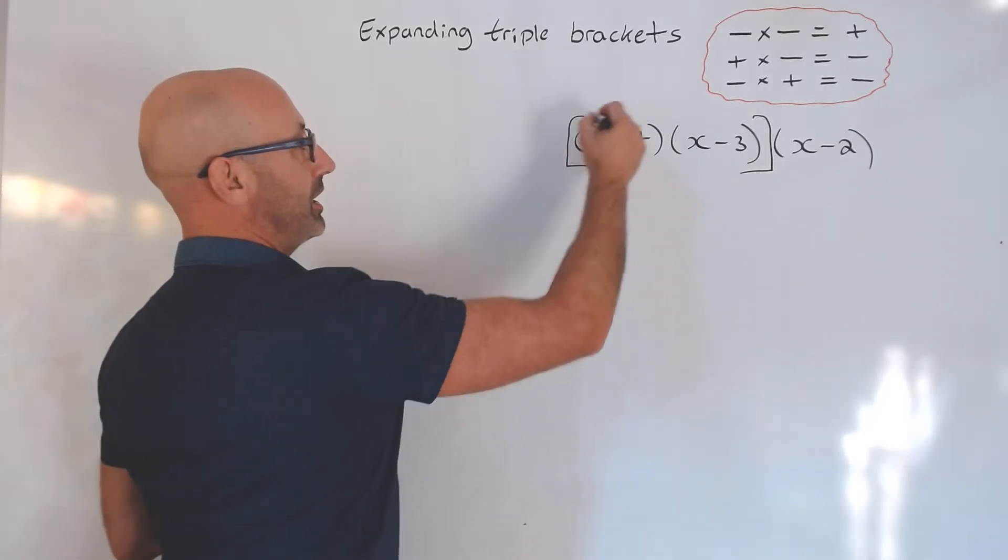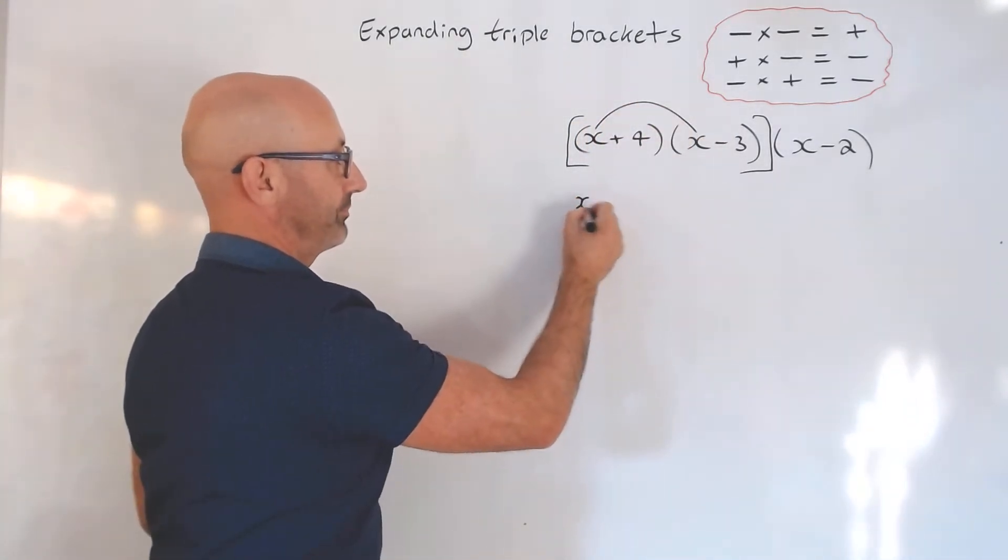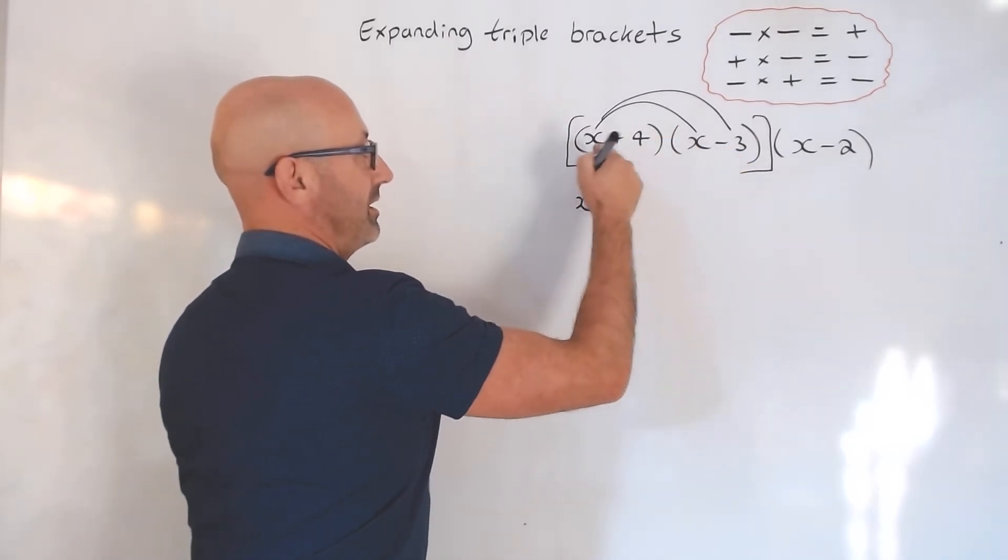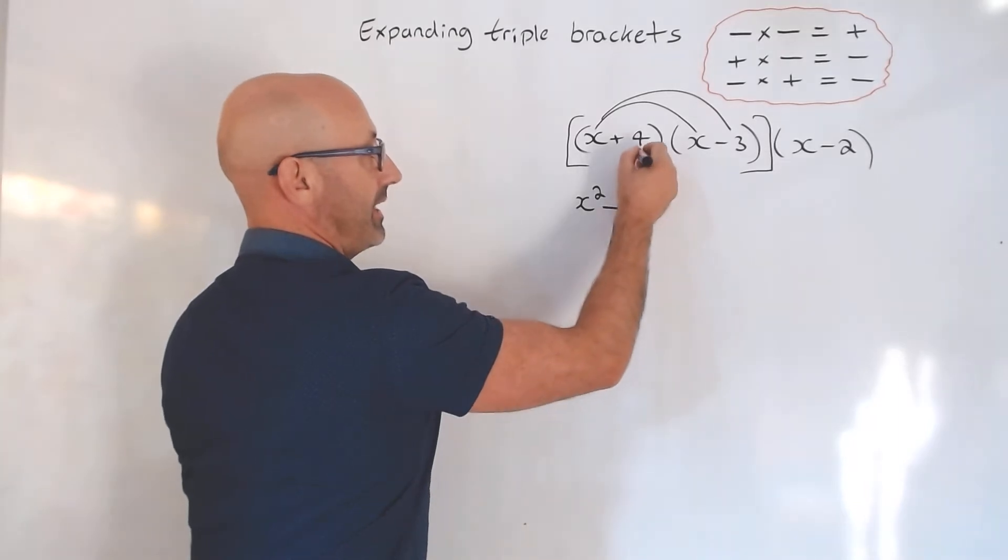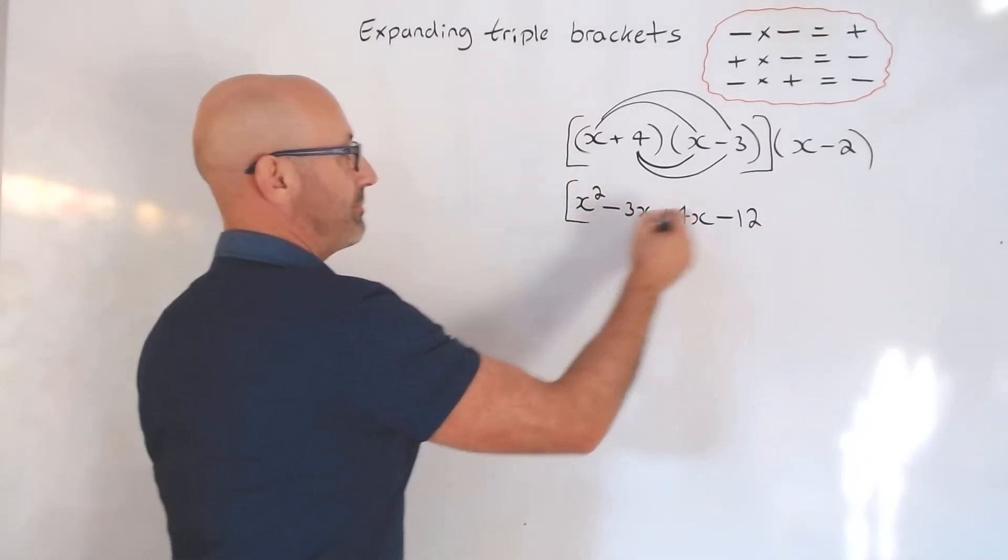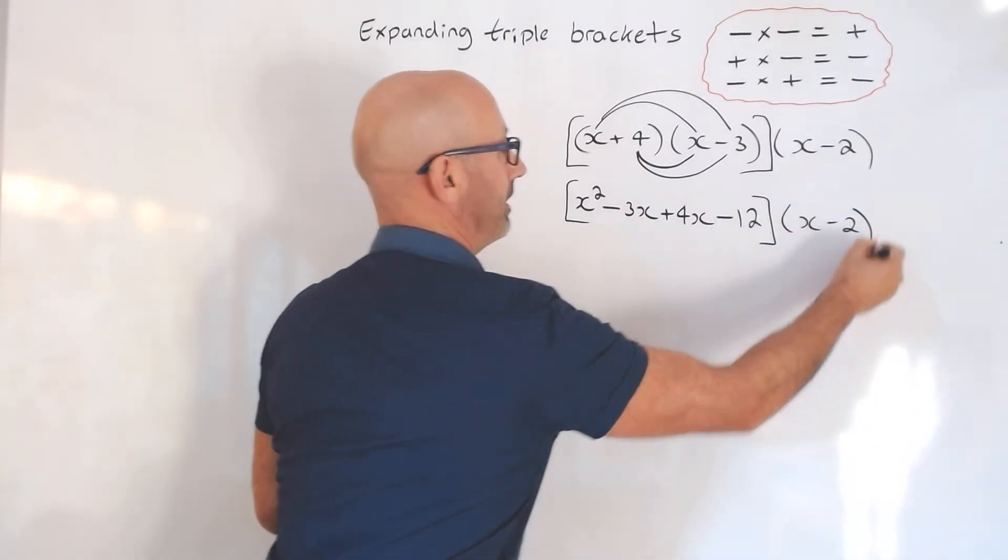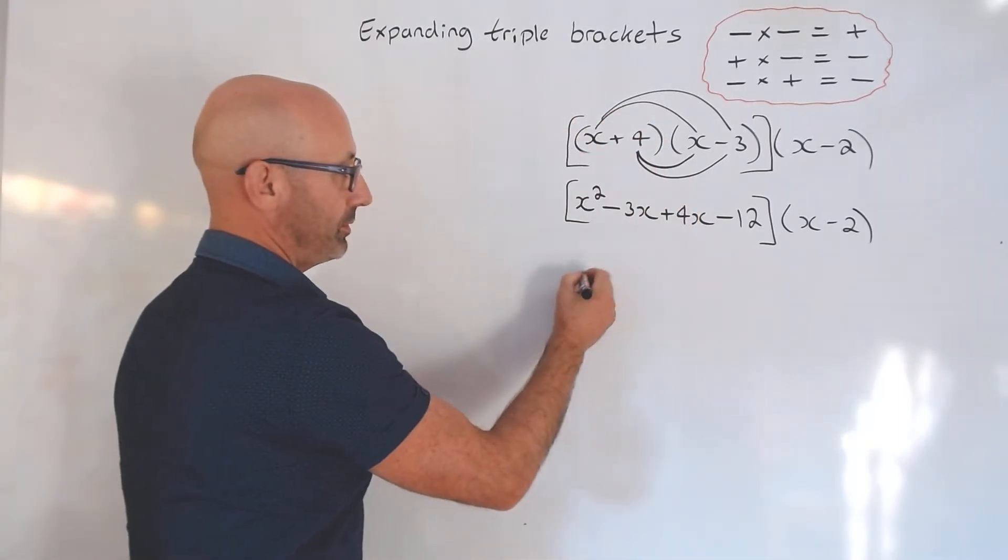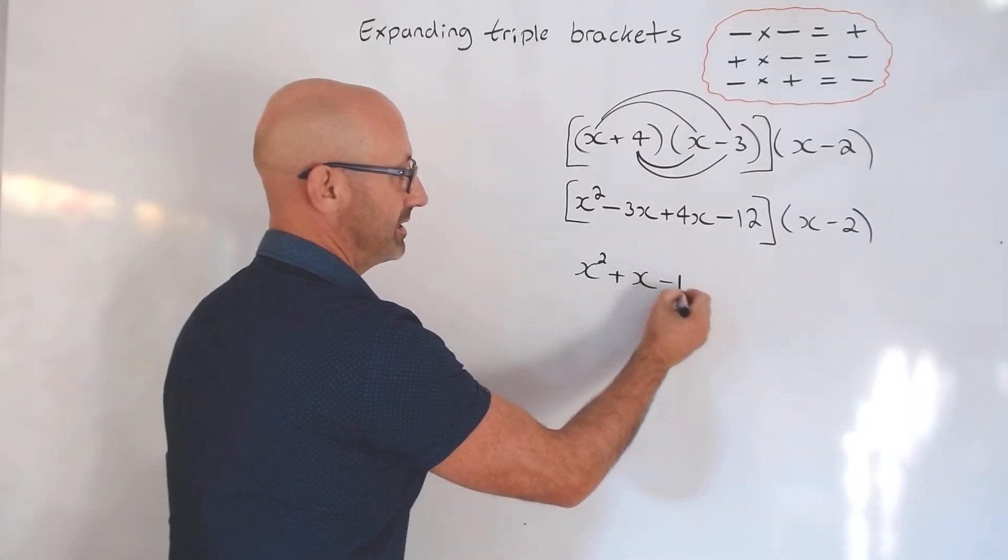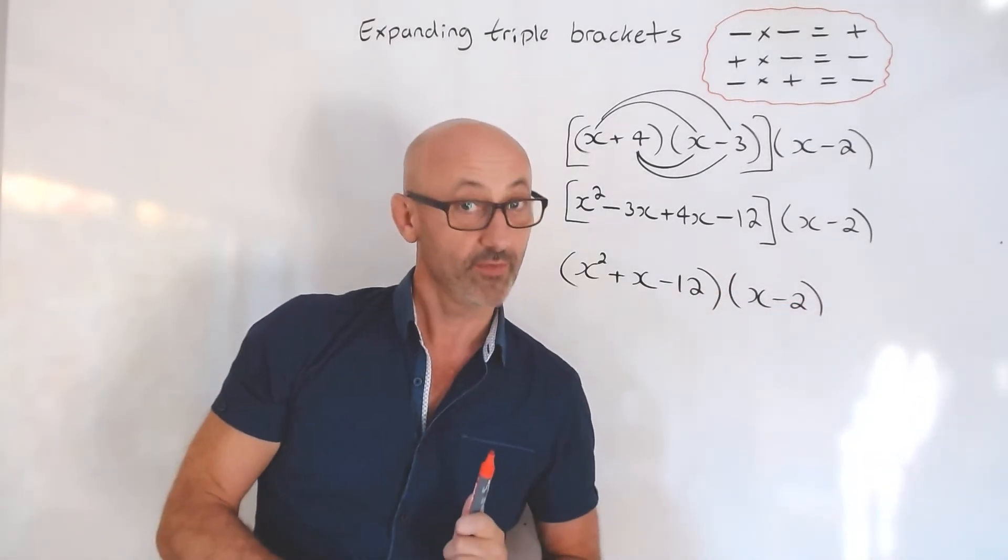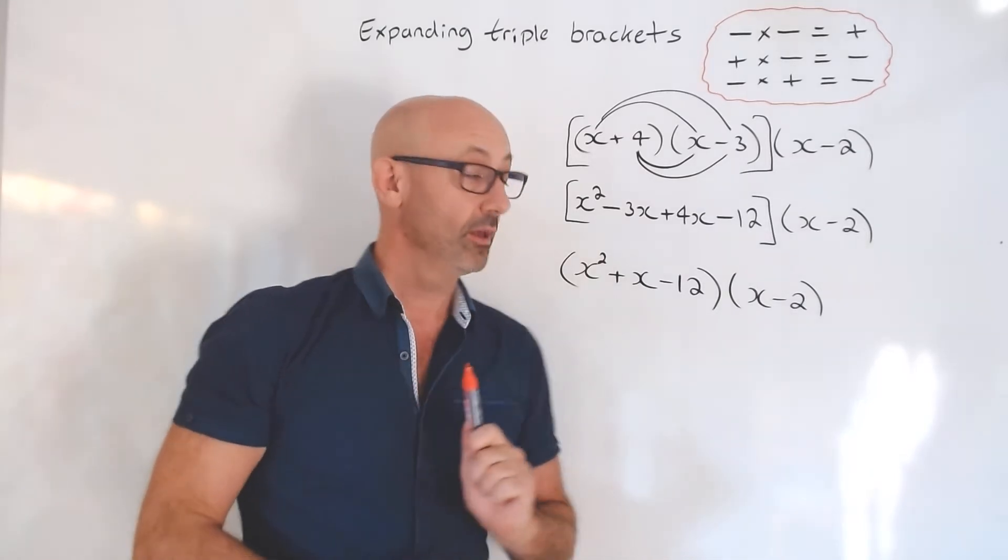We are going to go x times x. I always do this in two stages: plus times minus is minus x, times 3 is minus 3x, and 4 times x is 4x, plus times minus, minus 4 times 3 is minus 12. So that is the square brackets there. We need to simplify this. If you're at minus 3 and you go up 4, you end up at plus x.